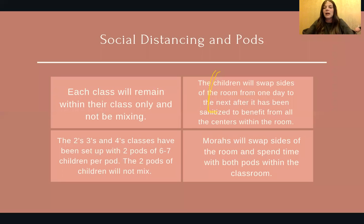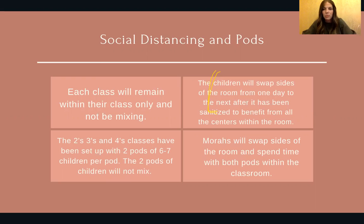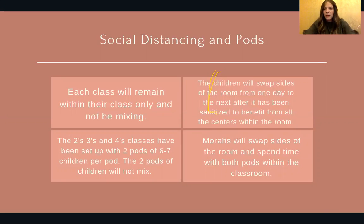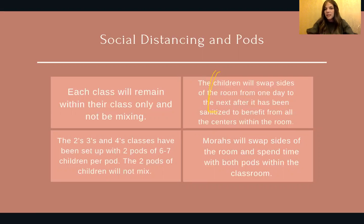We also moved the cubbies out into the hallway this year, so children's personal stuff is outside and not brought into the classroom — which helps with germs from home and also gave us more space inside. Both sides of the classroom have different centers. One side might have housekeeping, the library, math center, and blocks; the other side might have the science center, a library, manipulatives, and blocks. The class list is split into two pods. Children arrive and spend the day on their side — if it's a classroom of 12 kids, there are two pods of six, each with a mora.